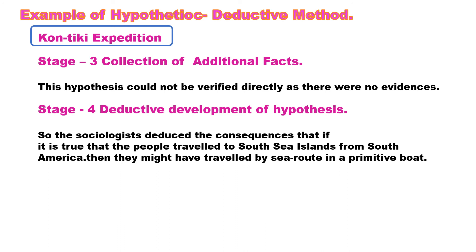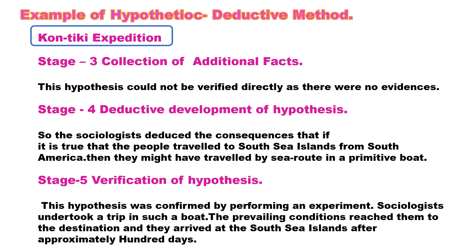These consequences had to be tested, so the fifth stage is verification of the hypothesis. The hypothesis was confirmed by performing an experiment. The sociologists undertook a trip in such a boat under the prevailing conditions and reached the destination — they arrived at the South Sea islands from South America after approximately 100 days. So their hypothesis was confirmed, considered true, and accepted as the solution to the problem.